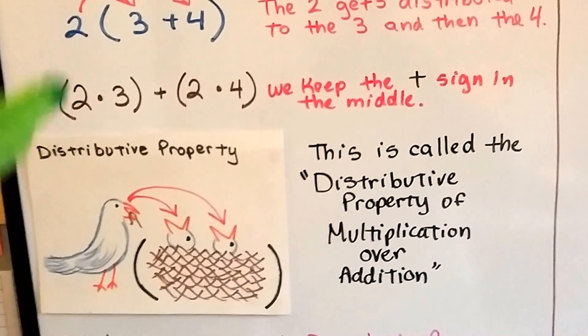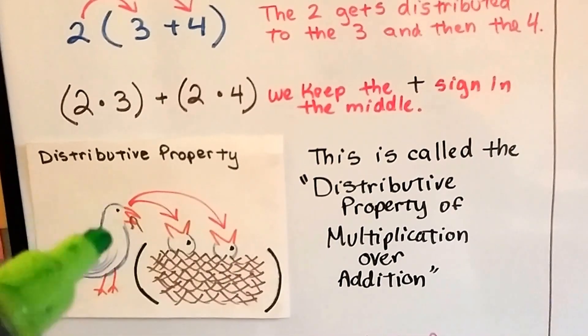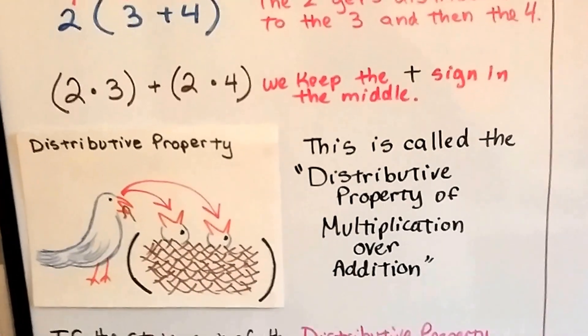And it's like a mother bird is the 2, and the 3 and 4 are the baby birds, and she's taking turns feeding each one. And she doesn't want anyone to starve, so she very carefully makes sure each one gets multiplied.